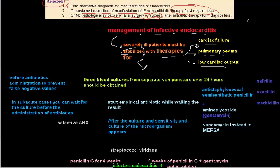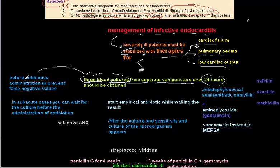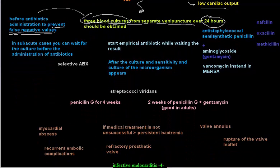After stabilization, you must take three blood cultures from separate venipunctures over 24 hours. It is essential to obtain these blood cultures before antibiotic administration to prevent false negative values, because administering antibiotics before withdrawing blood cultures may cause false negative results.